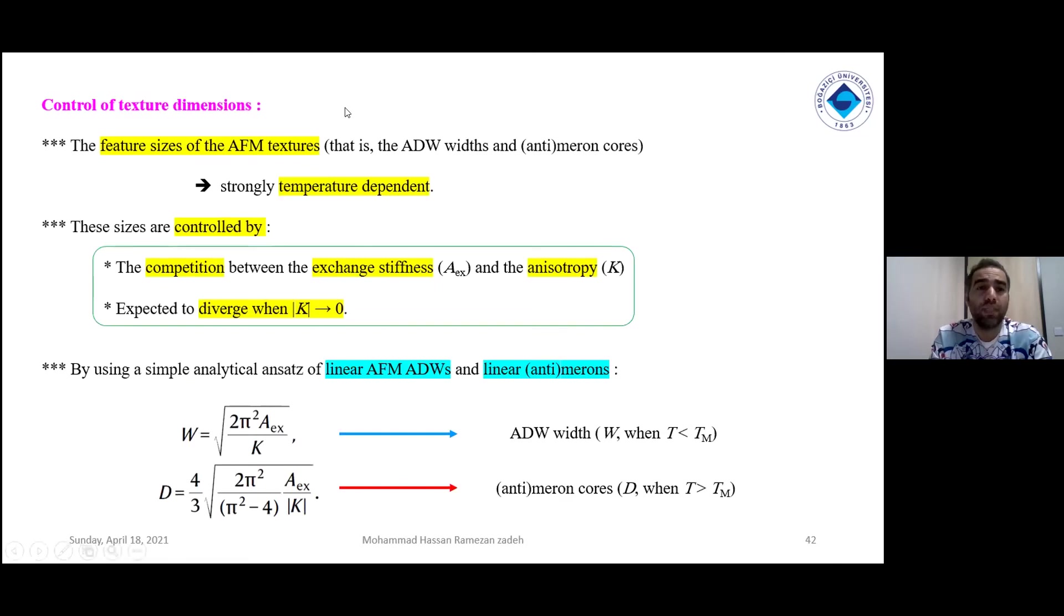About the control of the texture dimensions, they say that the feature sizes of the antiferromagnetic textures is temperature dependent and it can be controlled by two concepts: exchange stiffness Aex and also anisotropy K, which diverges when anisotropy is very close to zero. They use anisotropy and assume that antiferromagnetic ADW and merons and anti-merons, both of them are linear. They propose two formulas, W and D. As you can see in the formula, Aex and K, exchange stiffness and anisotropy are included in the formulas.